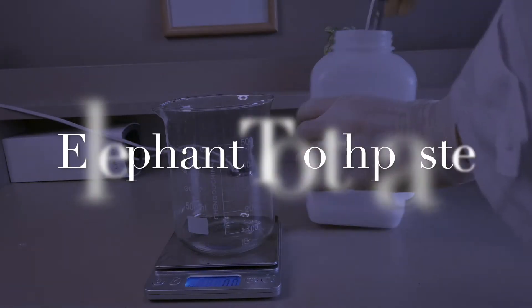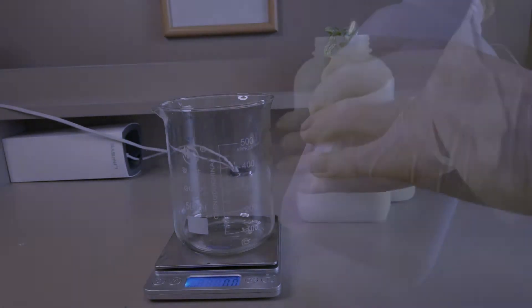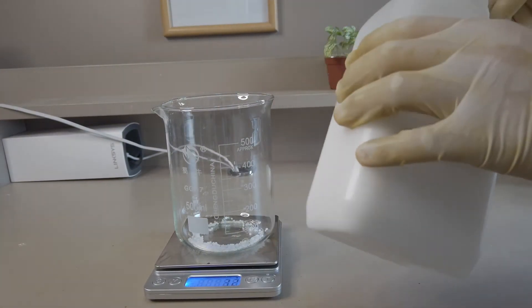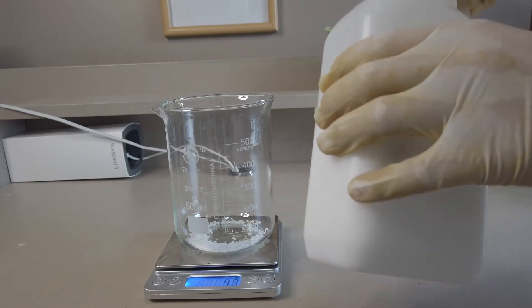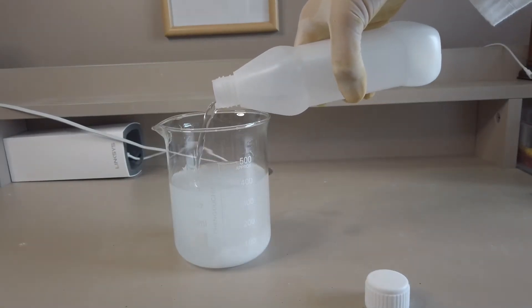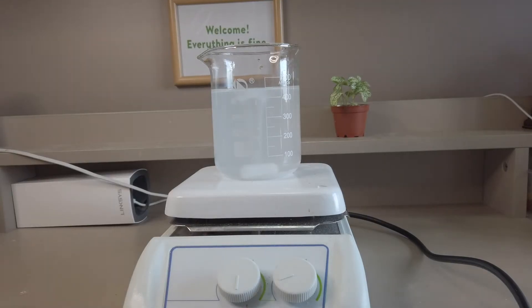Let's start with our first reaction, the elephant toothpaste. We added an excess amount of sodium hydroxide pellets which can be found as caustic soda. Then we added around 450 milliliters of distilled water to make a strongly basic solution.